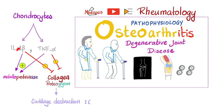Chondrocytes releasing interleukin-1 and TNF-alpha. Both of them will stimulate metalloproteinases — enzymes that degrade proteins and need metals like zinc — leading to cartilage destruction. Moreover, interleukin-1 and TNF-alpha inhibit collagen and proteoglycan formation, leading to further cartilage destruction.